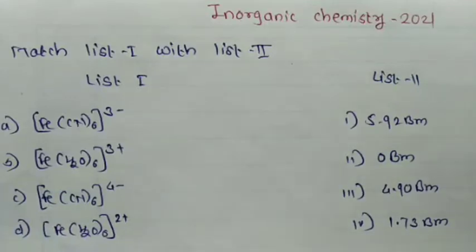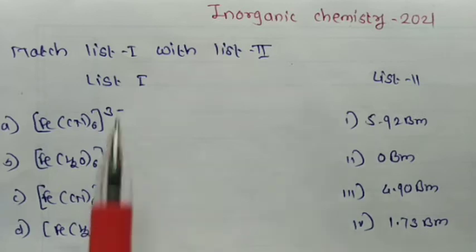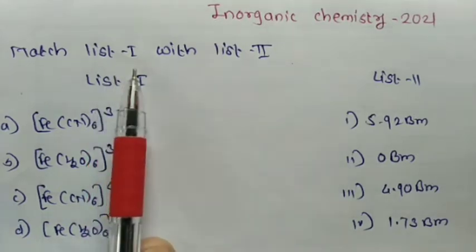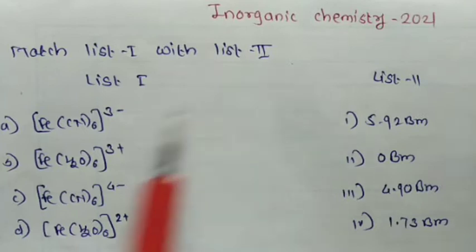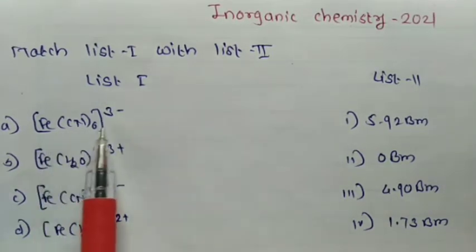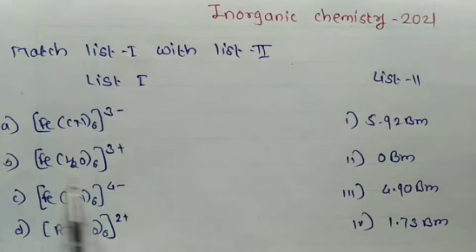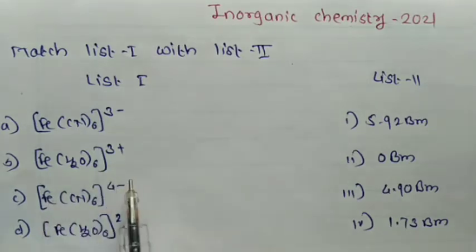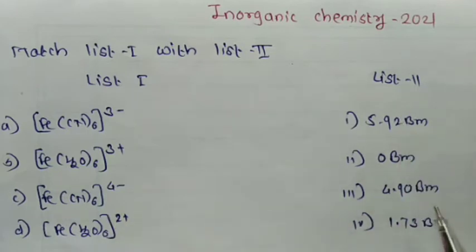Good morning students. Today we are going to discuss some inorganic questions. See first question: match list 1 with list 2. In list 1 we have Fe(CN)₆³⁻, Fe(H₂O)₆³⁺, Fe(CN)₆⁴⁻, and Fe(H₂O)₆²⁺. List 2 gives the spin magnetic moment of the list 1 complexes.